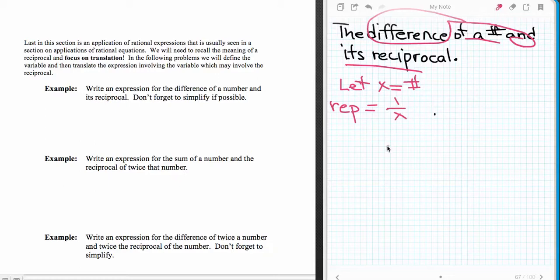The difference means subtract these, so the number minus 1 over its reciprocal. Now from there, I want to build the higher terms like we were dealing with before. I'll put this over 1, and multiply this one by x and multiply this one by x. So now I have x squared minus 1 all over my common denominator of x.